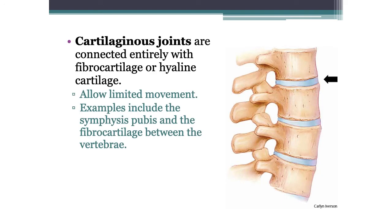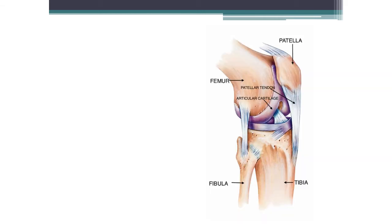Cartilaginous joints are connected entirely with fibrocartilage or hyaline cartilage and allow limited movement. Examples include between the pubis in the pelvic girdle and between the vertebrae. These cartilaginous joints just have cartilage between them.